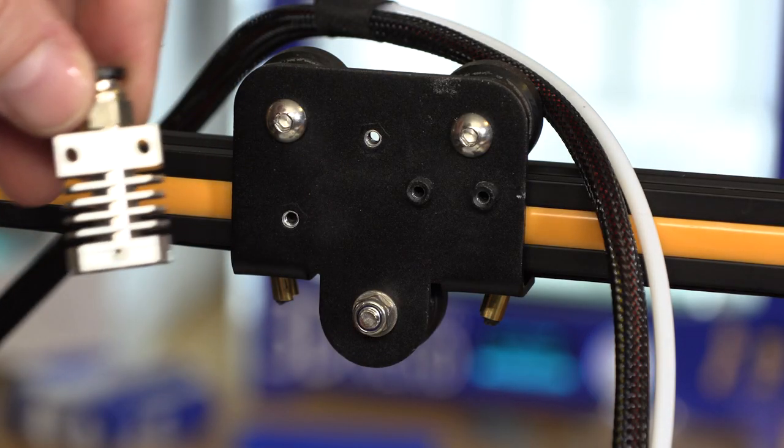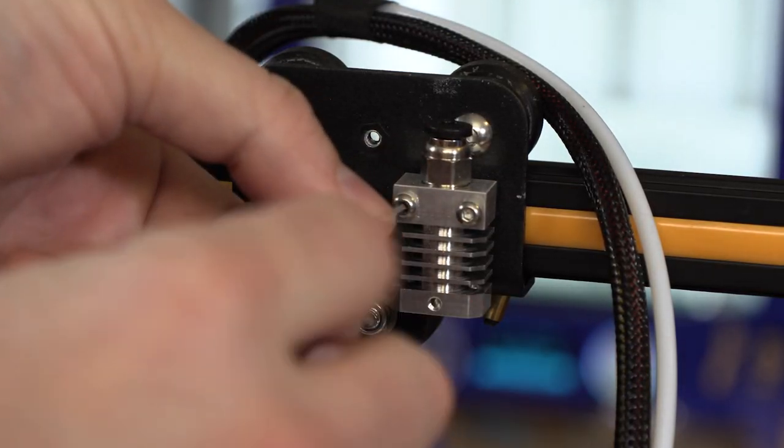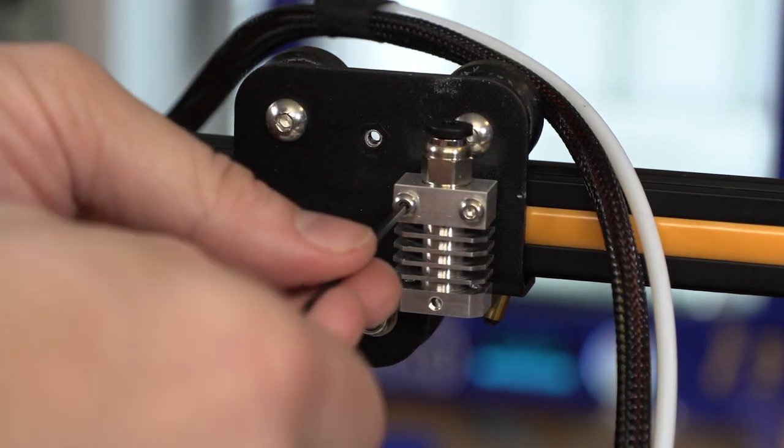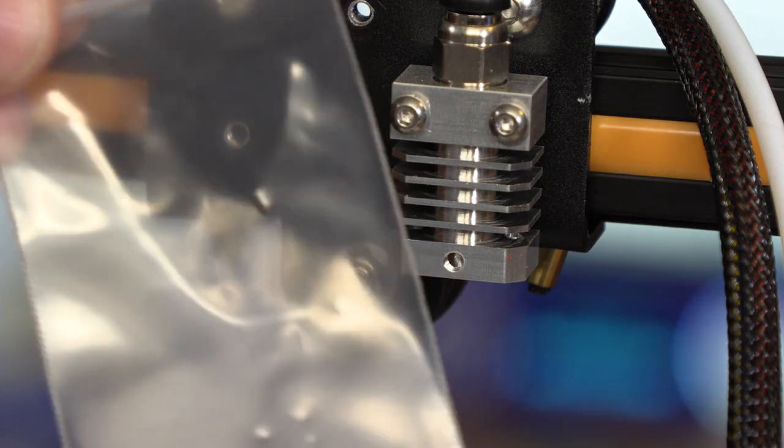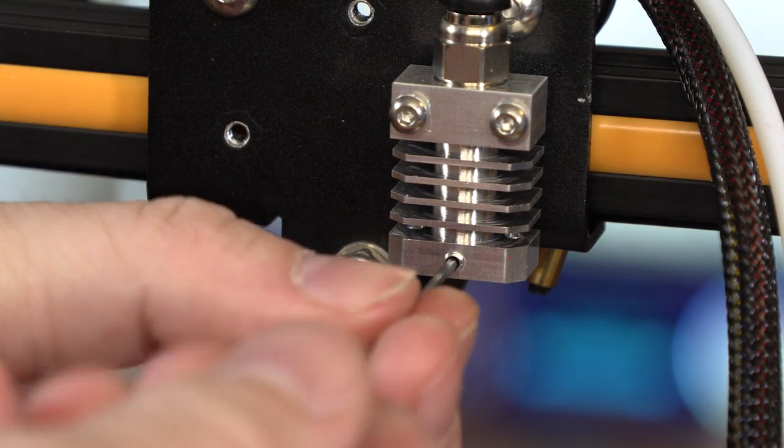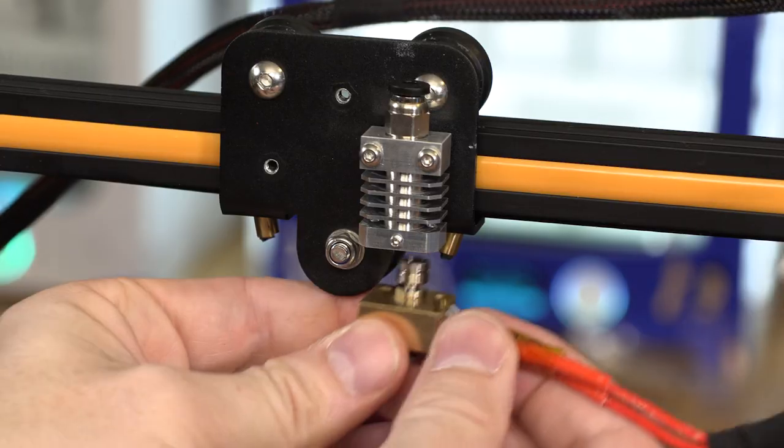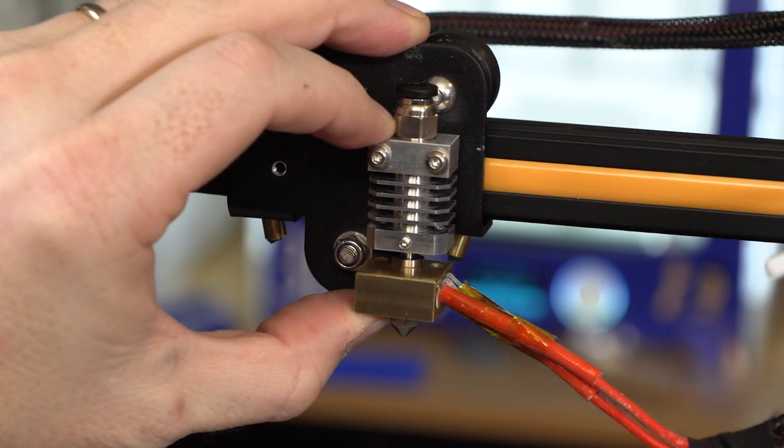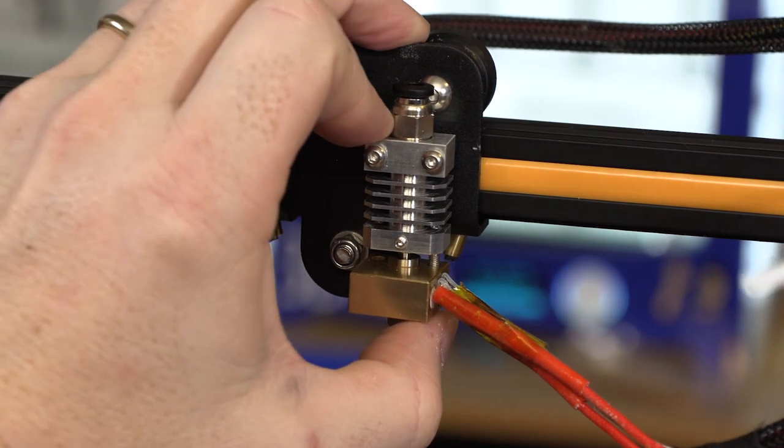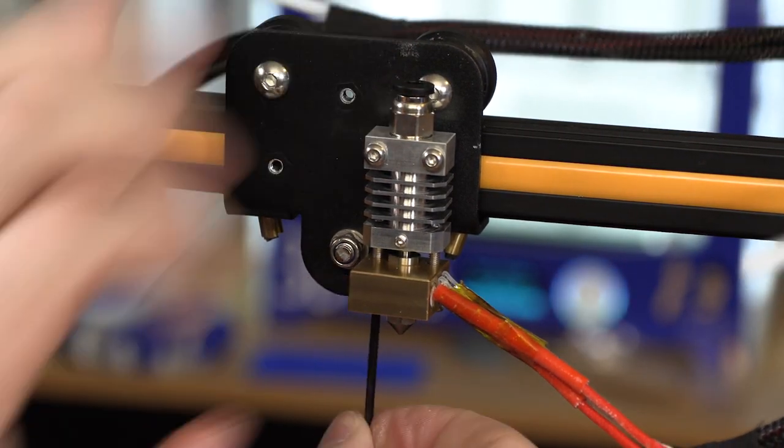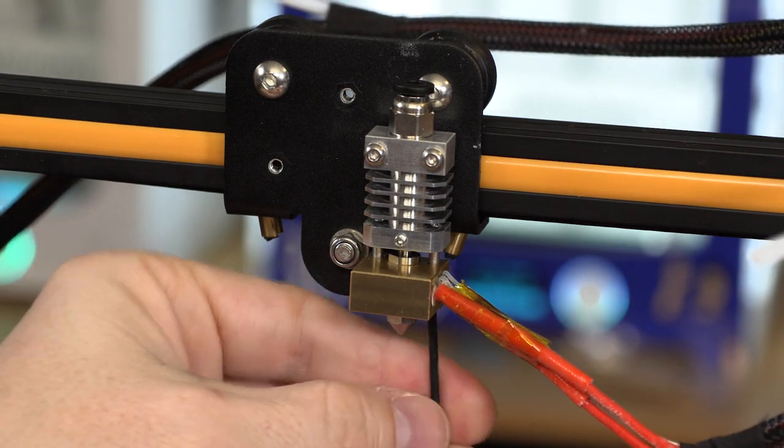Find the new cooling block from the kit and using the two screws from before and your 2mm hex wrench, install that. Now using that 1.5mm hex wrench, put the grub screw in, but remember, not too far. At this point, you're going to slide that heat brake into position into the cooling block. Once it's in, use the 2 screws that were holding the heater block in place before and screw those into place.